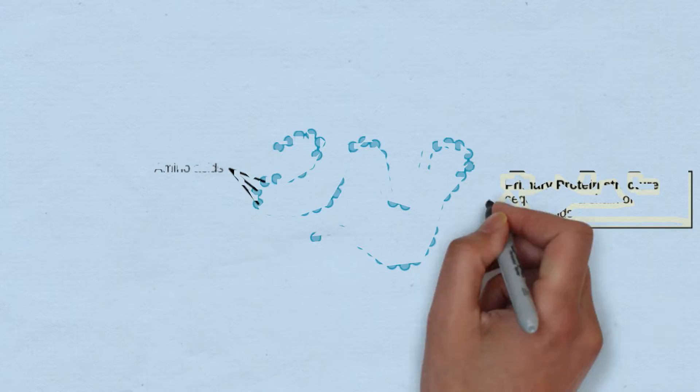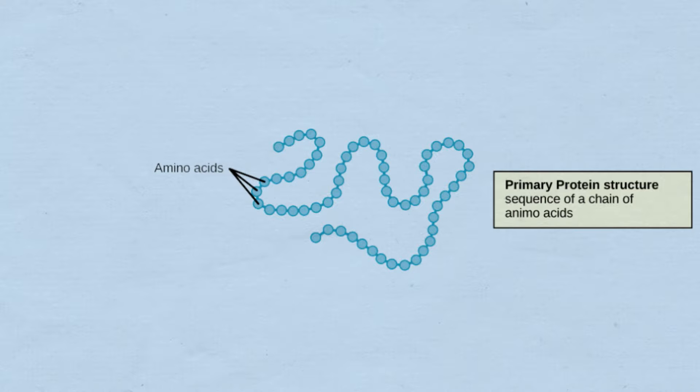Now we will look at the structure of proteins. The first stage of protein structure is the primary protein structure. The primary protein structure is the sequence of a chain of amino acids. The sequence of amino acids is important because this will determine how the protein folds and it affects the shape of the protein later on.